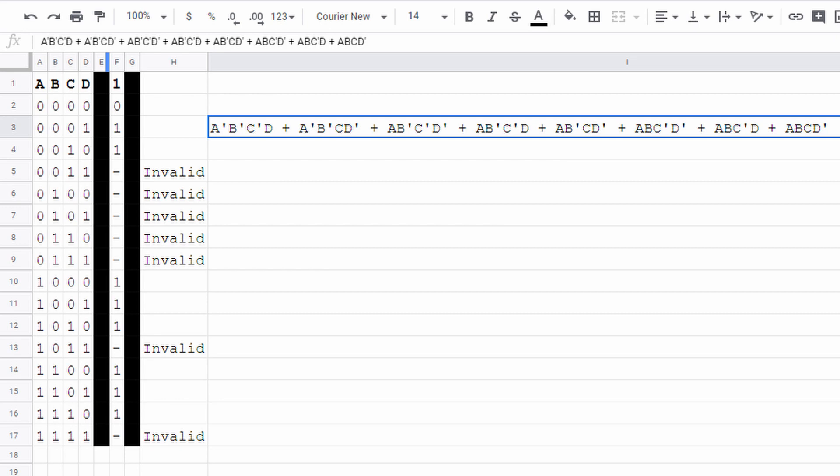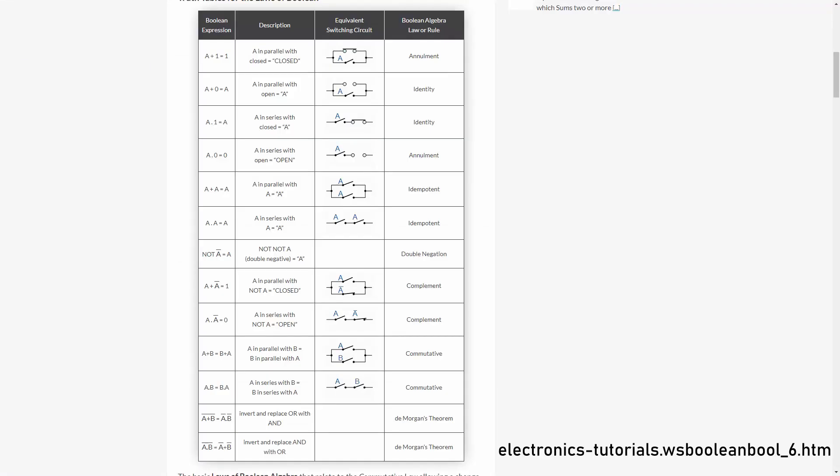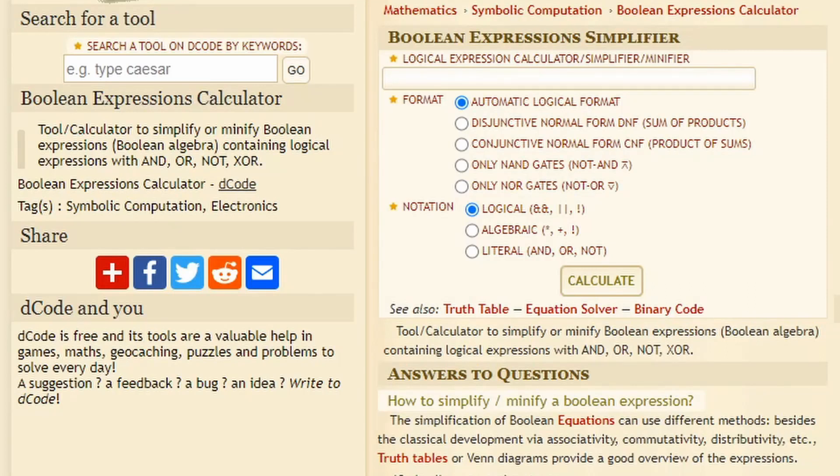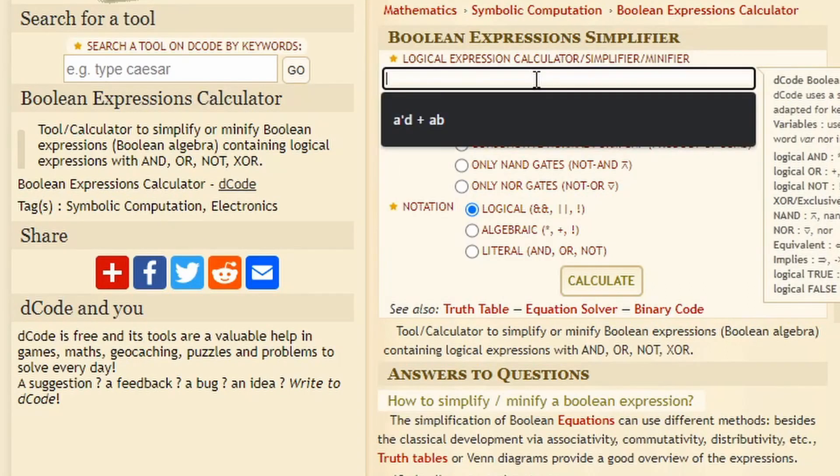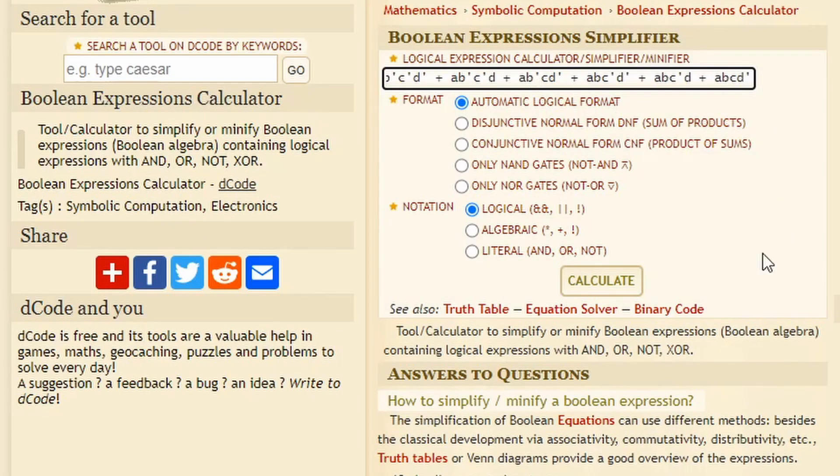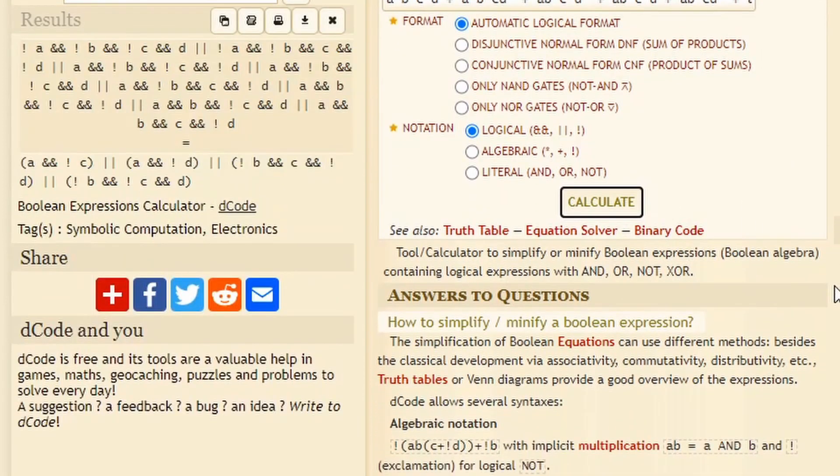The next step is simplification. That involves looking at this handy-dandy cheat sheet that shows all the simplification rules and following it. I would show you each step of my simplification, but honestly, once you have the string I developed, you can just throw it in an online calculator, and it'll give you a fully simplified result.